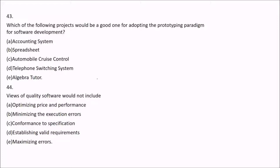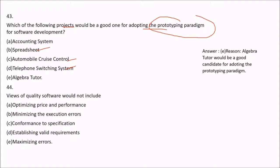Question 43: Which of the following projects would be a good candidate for adopting the prototyping paradigm for software development? Options include accounting system, spreadsheet, automobile cruise control, telephone switching system, and algebra tutor. The answer is algebra tutor. The fight is between automobile cruise control, telephone switching system, and algebra tutor — but the first two systems already exist in some form, whereas the algebra tutor is quite new and requires a prototype to be precise about requirements.